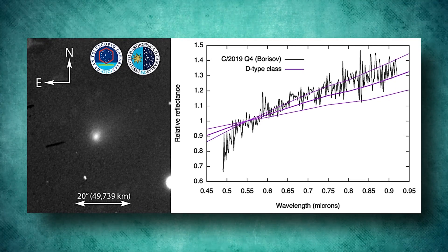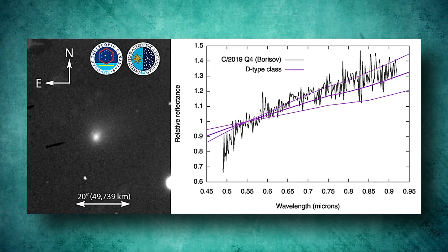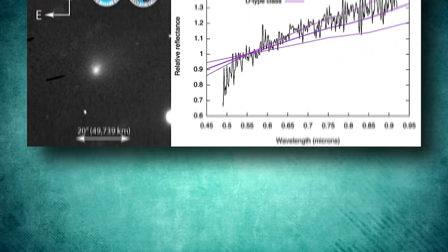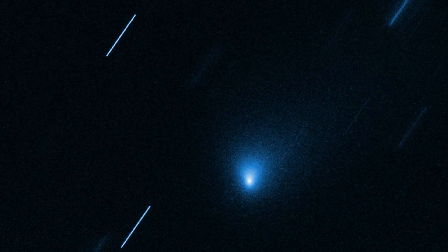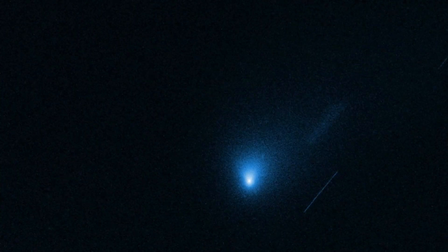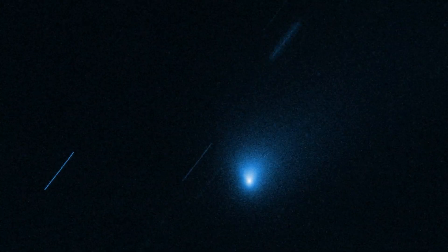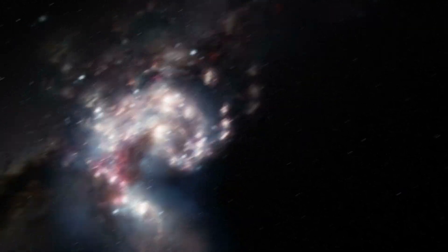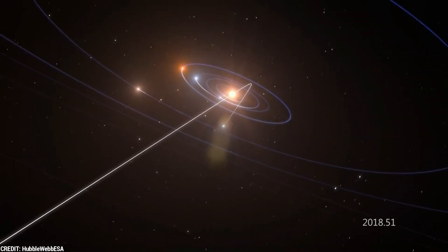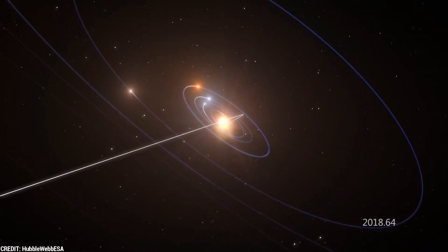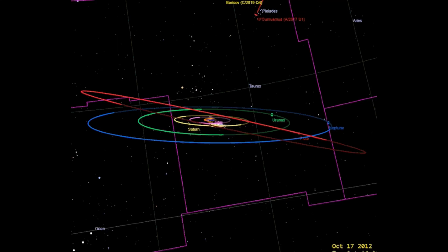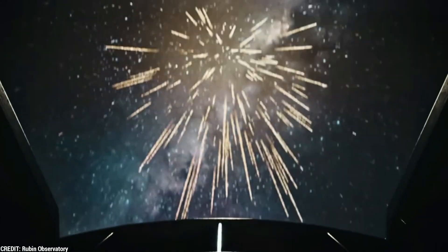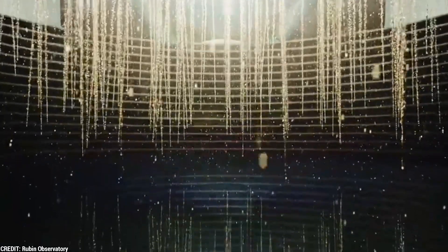Interestingly, carbon monoxide levels in 2I/Borisov are higher than in typical solar system comets, suggesting an extremely cold origin. Studying this comet helps us understand diverse planetary systems and contributes to our knowledge of Oumuamua, the first interstellar visitor discovered in 2017. While we won't see 2I/Borisov again, future technological advancements may reveal more captivating objects from beyond.